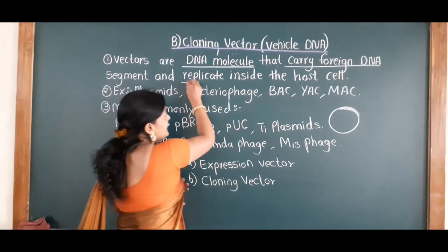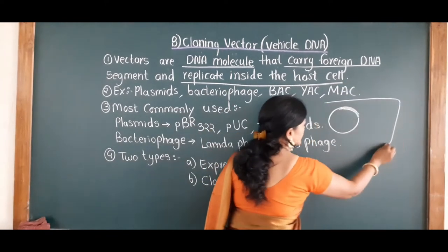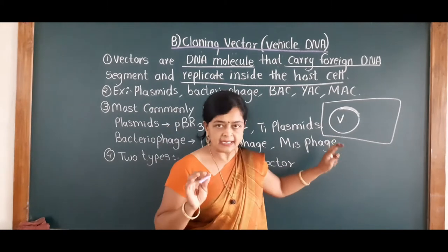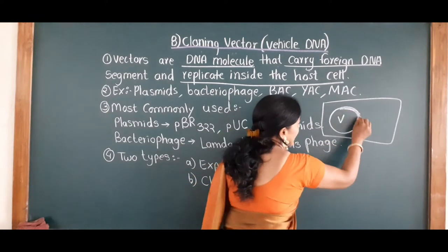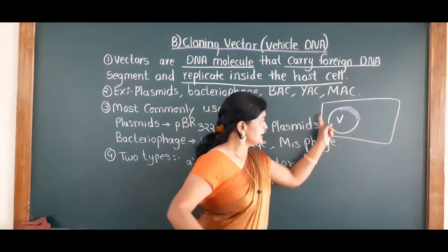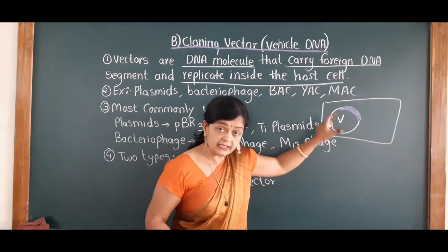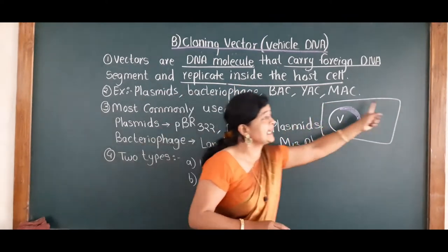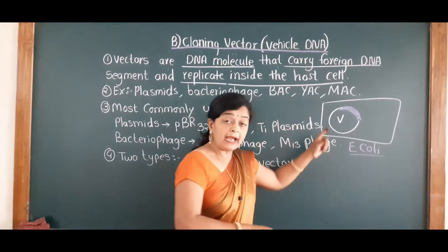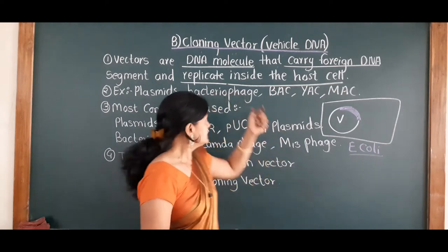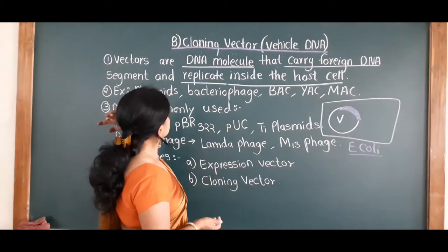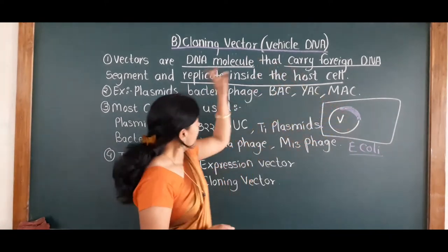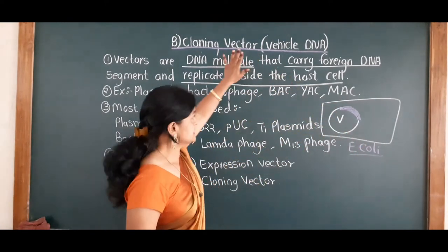The DNA segment replicates autonomously — they replicate inside the host cell. Suppose this is the E.coli bacteria. This is the vector. Vector is nothing but a DNA molecule which carries a foreign DNA fragment. Suppose this part is a foreign DNA segment. So vector is the DNA molecule which carries a foreign DNA segment and can replicate automatically inside the host cell, such as E.coli. This is the definition of vector.